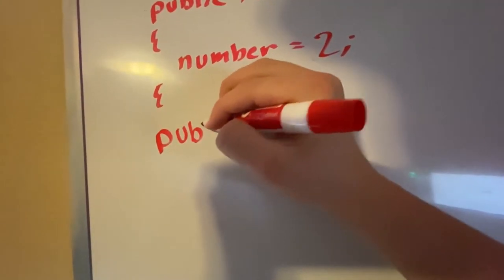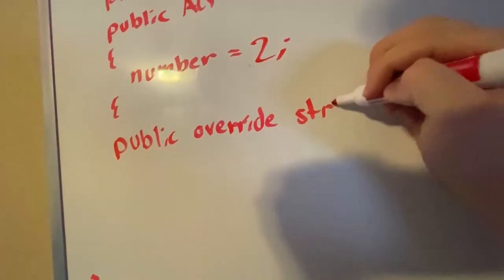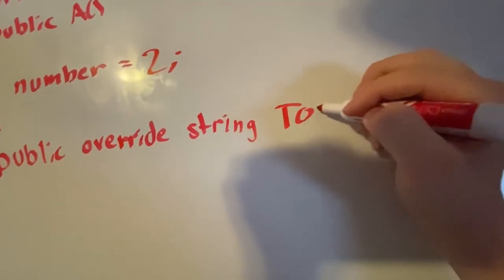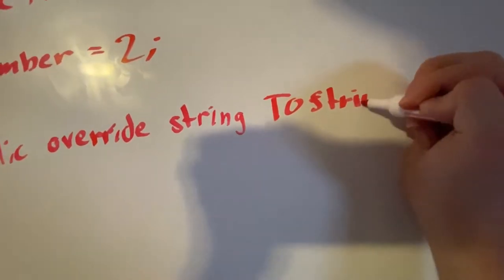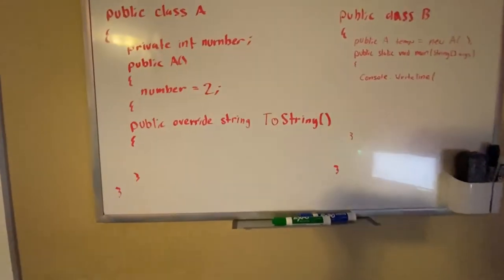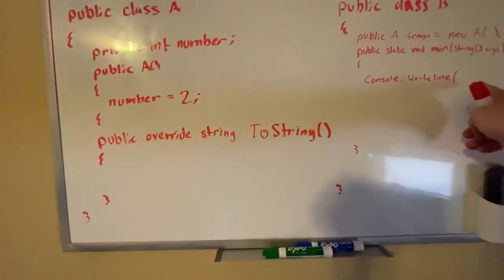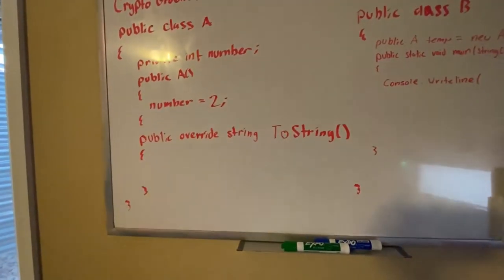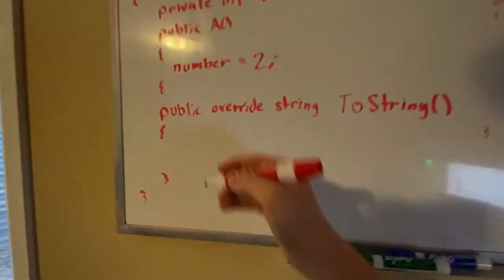All right, I've rewritten my class and now we're going to finally override this. So what we do here is write public override string ToString. So now what we do here is we return a string. That's pretty much it.